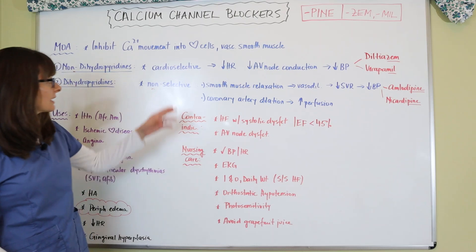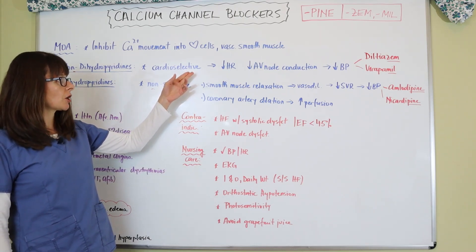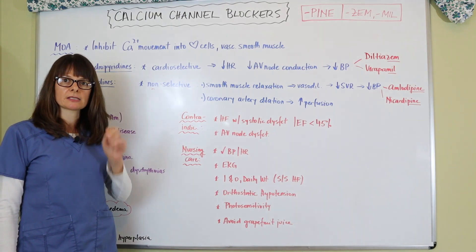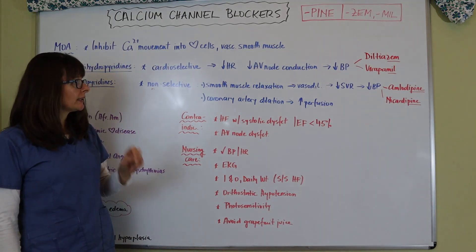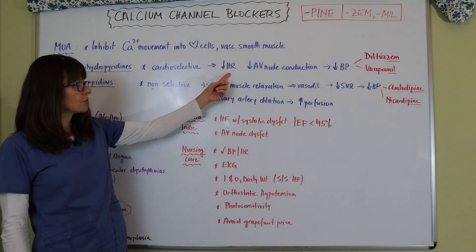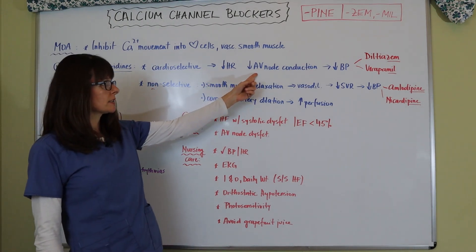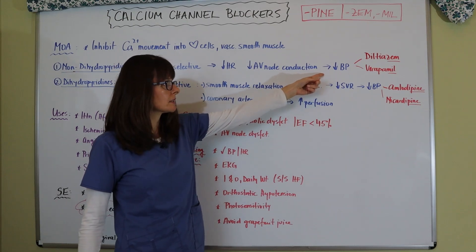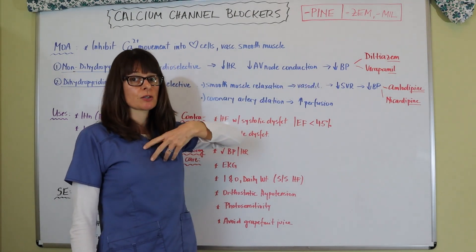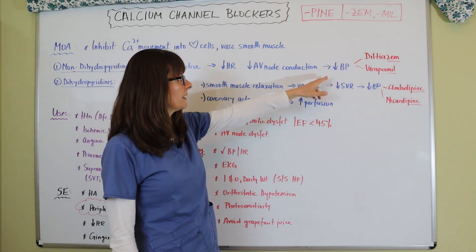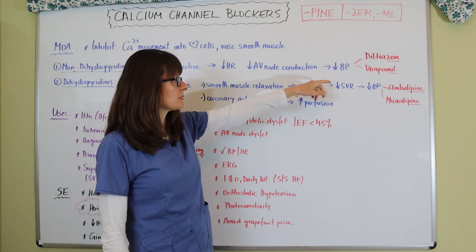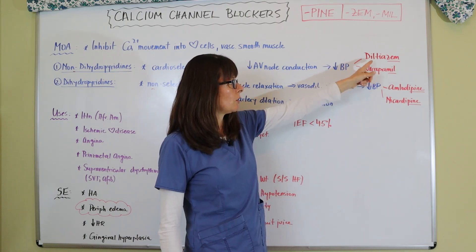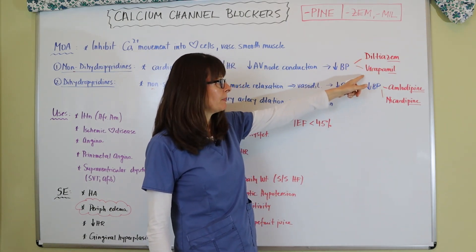Cardioselective means that these calcium channel blockers only block the calcium channels in the heart. When they do that, they decrease the heart rate and decrease the conduction through the AV node, and therefore blood pressure gets lowered. There are really only two medications in this non-dihydropyridine class: diltiazem, also known as Cardizem, and verapamil.